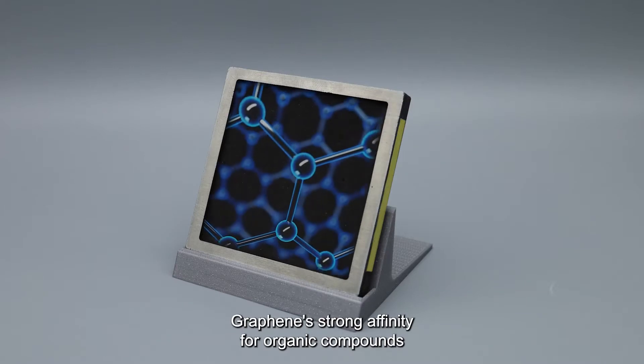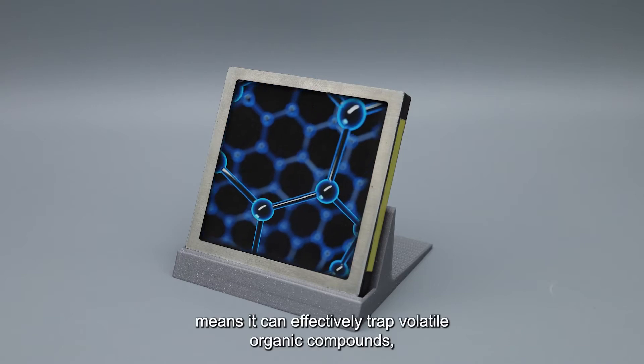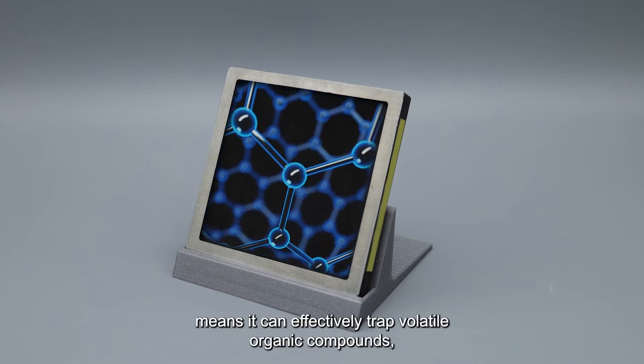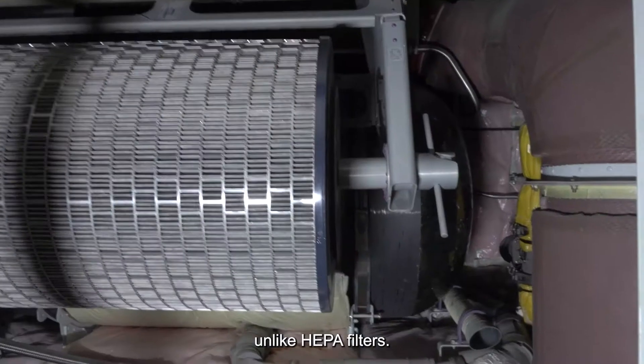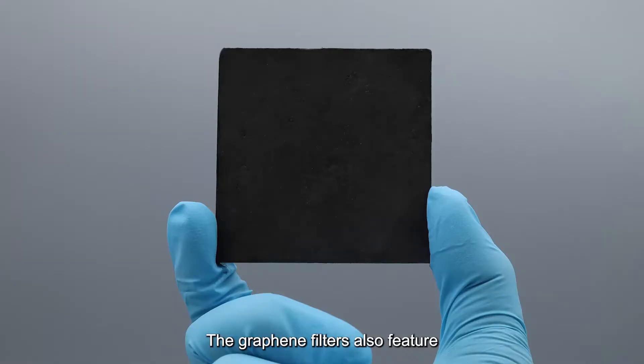Graphene's strong affinity for organic compounds, combined with its high surface area, means it can effectively trap volatile organic compounds, unlike HEPA filters. The graphene filters also feature a unique self-cleaning functionality.